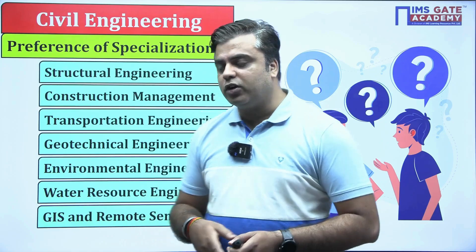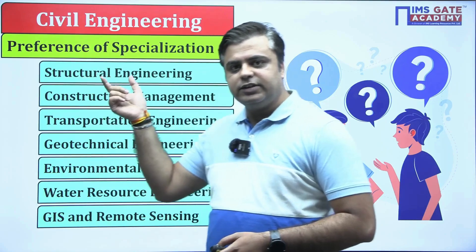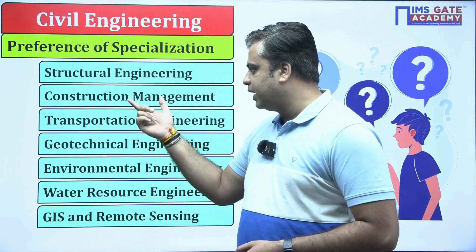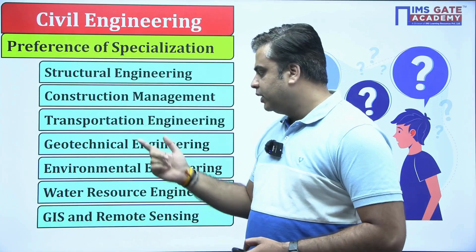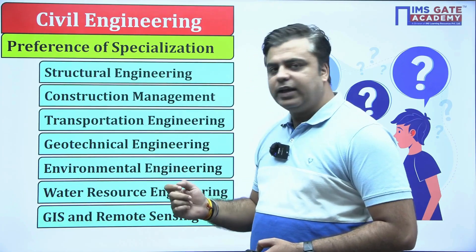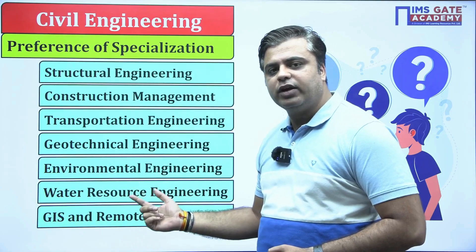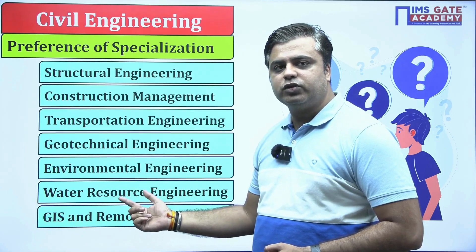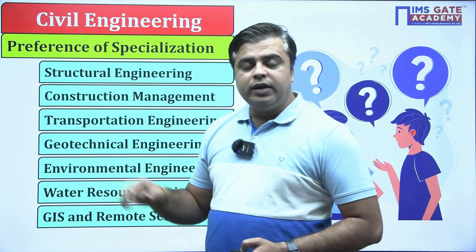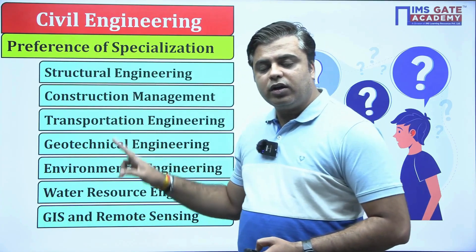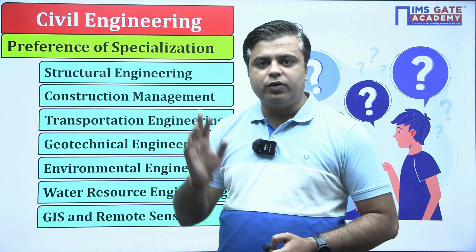Your preference order should be: first preference should be structural engineering, second should be construction management, third should be transportation engineering, then next you can go for geotechnical engineering, next will be environmental engineering, then water resource engineering, and last will be GIS and remote sensing. This is the order of preference based on the kind of jobs offered.